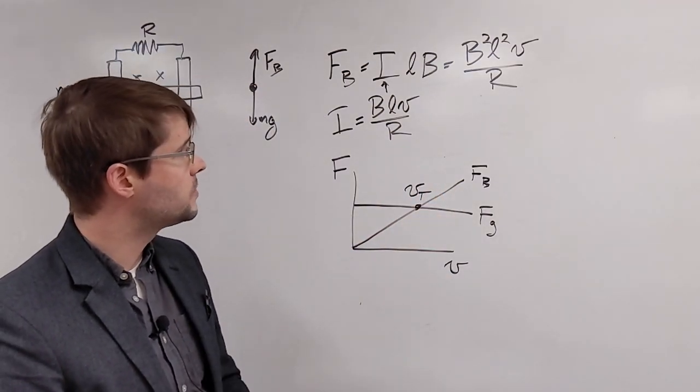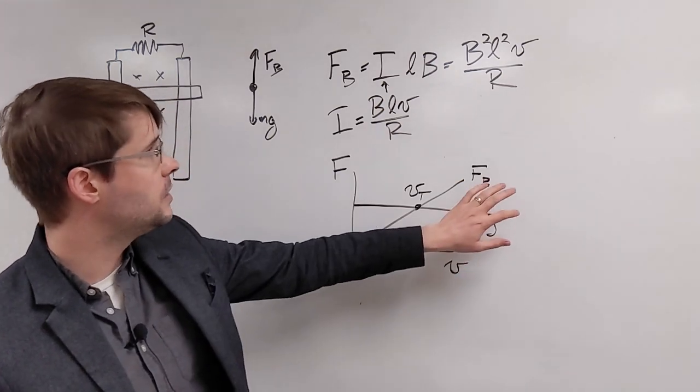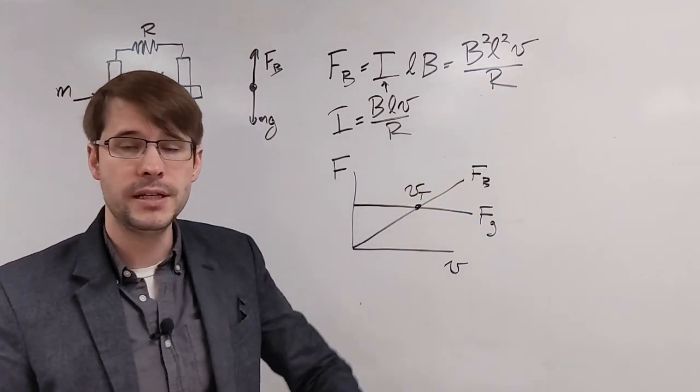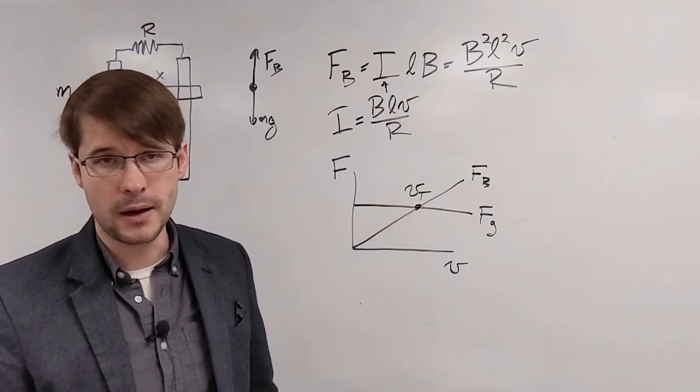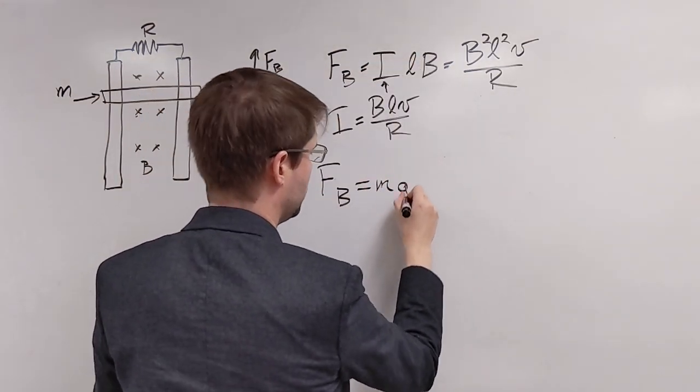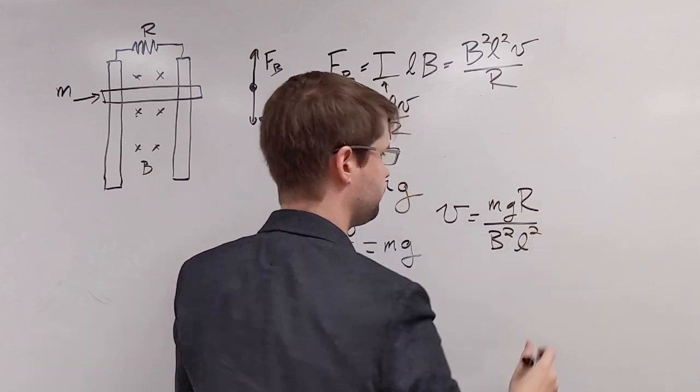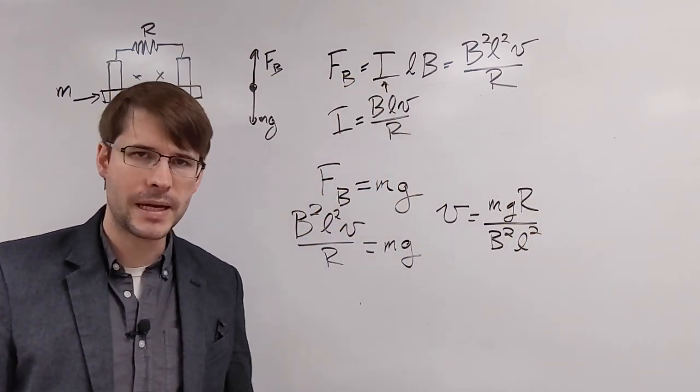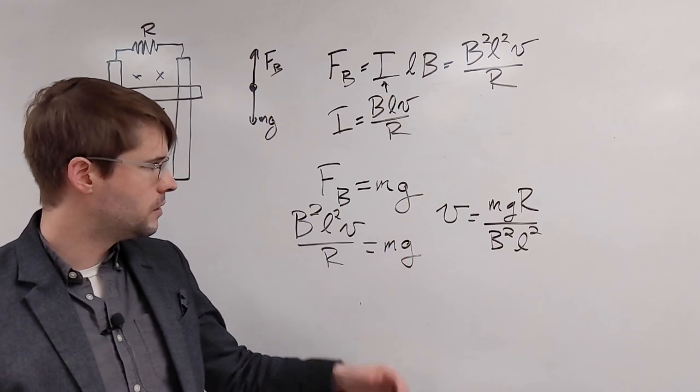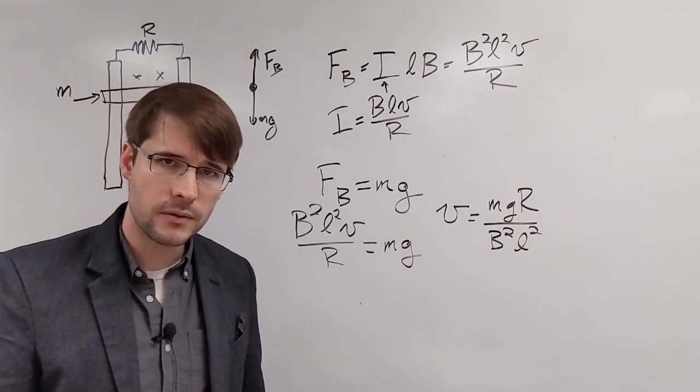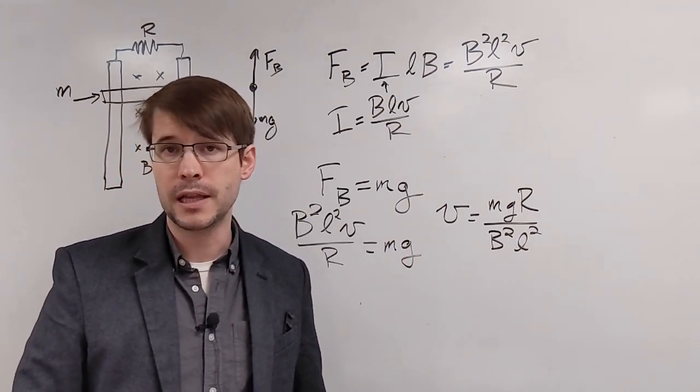Now what we can do is actually set these two equations equal to one another. This one equals mg and solve for v. Let's do that now. And there we have it. All we do is plug this in, do a little bit of algebra, and we've found a velocity that an object will travel at in this sort of situation.